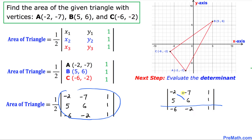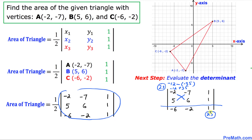Let's multiply: negative 2 times 6 is negative 12. Then we put a minus sign and crisscross multiply the other way: negative 7 times 5 is negative 35. So that gives us negative 12 plus 35, which equals 23. This 23 goes on the opposite side.